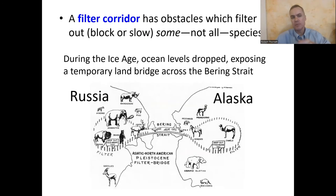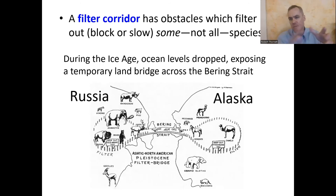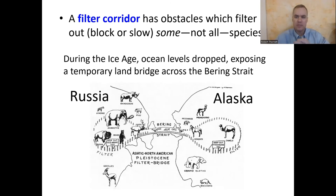Let's look at a couple of different types of wildlife corridors. The first is called a filter corridor, which is just like it sounds — it has the ability to filter out certain species and prevent them from getting through while allowing others through. Just like a coffee filter or air filter, some stuff gets through and some doesn't.